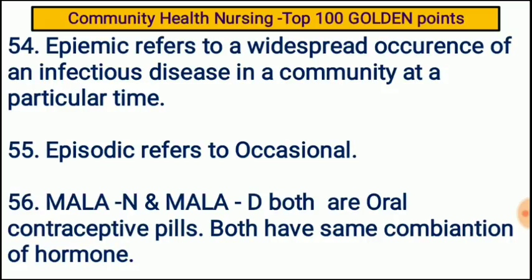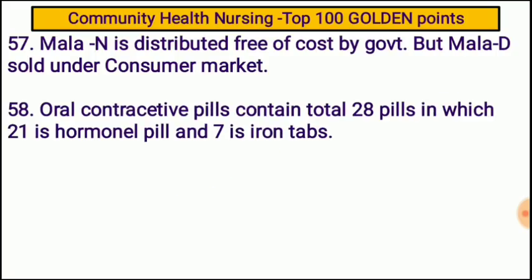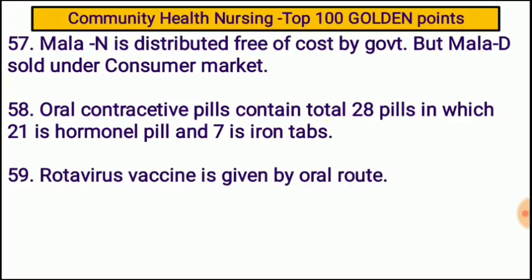Mala N and Mala D are both oral contraceptive pills with the same combination of hormones. Mala N is distributed free of cost by the government, but Mala D is sold on the consumer market. Oral contraceptive pills contain 28 pills in total — 21 hormonal pills and 7 iron tablets. Rotavirus vaccine is given by oral route.